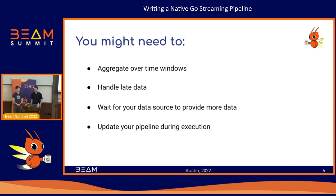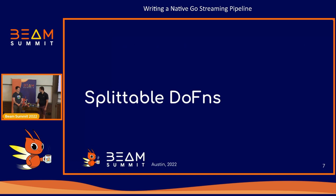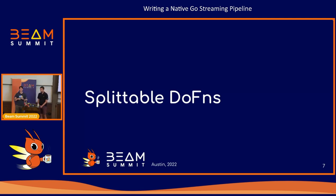We won't get into things like triggering strategies, but will focus on how to write a full streaming source. With that, Jack's going to talk about splittable DoFns. Splittable DoFns are an important concept in Beam as a whole for scaling, but in streaming they are paramount for how you operate on streaming data.